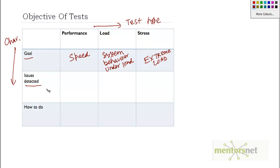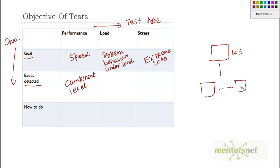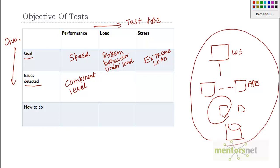Now let's fill up what kind of issues you detect in each test. In performance testing, we detect issues at the component level. Recalling the deployment diagram from the last video — we have a web server, farms of app servers, two database servers, and storage. A performance test addresses whether there is any problem at this component level. In performance testing, our focus is really on issues at the very component level.